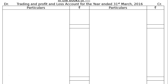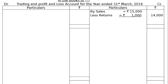After drawing the format, start from the credit side: by Sales Rs 15,000, less returns Rs 1,000. In the final column we will have Rs 14,000. Then by closing stock Rs 4,500 — this is an adjustment and will be shown under the head current assets in the asset side of the balance sheet.